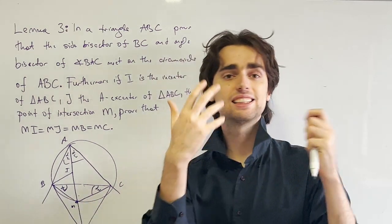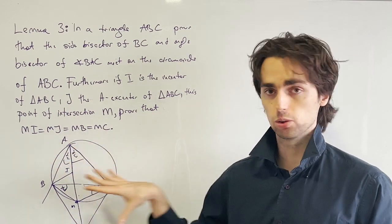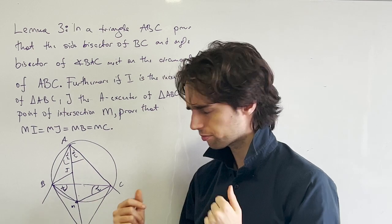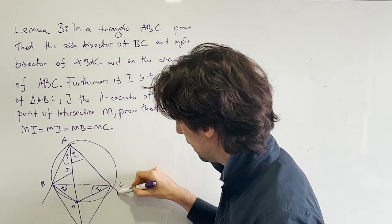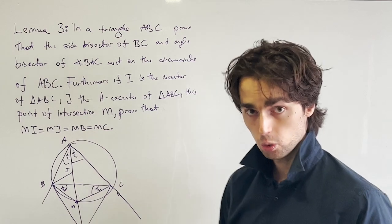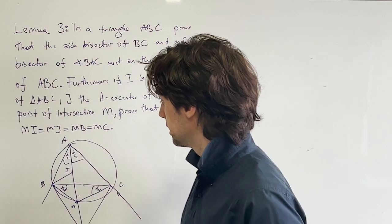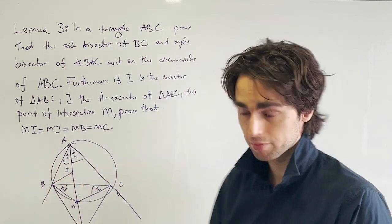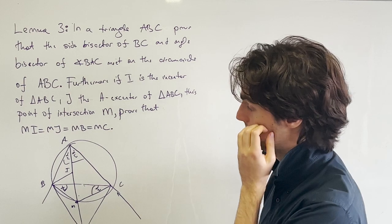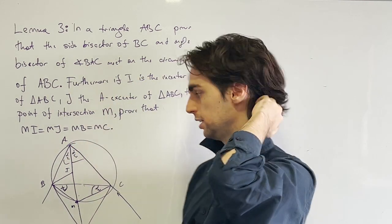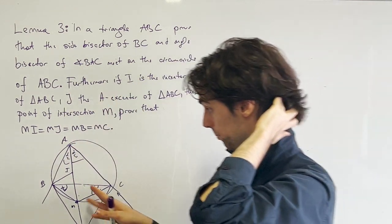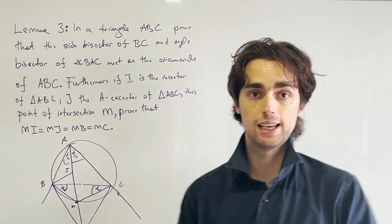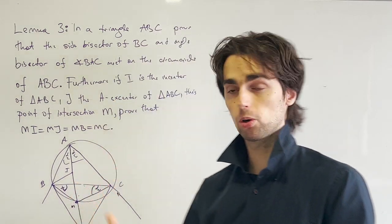So before you pause, let me just say what the excenter is because this is an introductory geometry for competitive mathematics lemma. And the excenter is the point where you have, just like you have the incircle, which is a point that is the center of a circle which touches the sides of ABC, the internal segments of the triangle ABC. The excircle opposite A is the circle that touches the side BC, and the extensions of AB and AC. And there exists one such point, one such circle, and here's why.